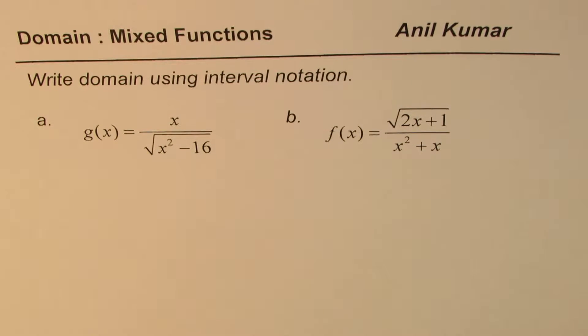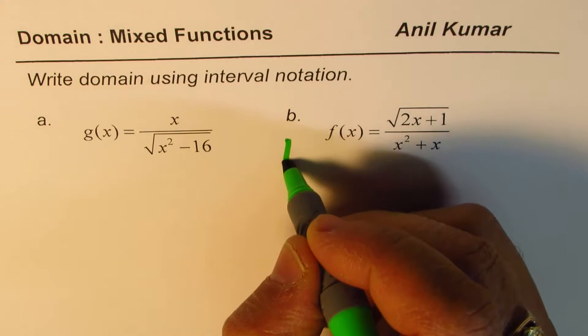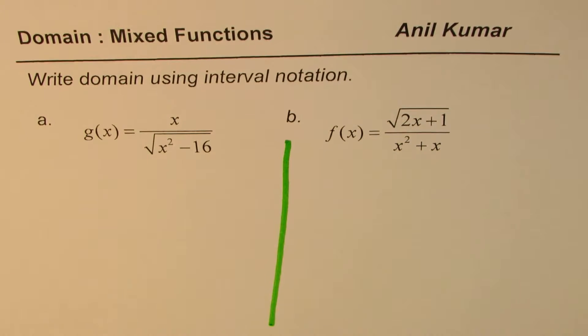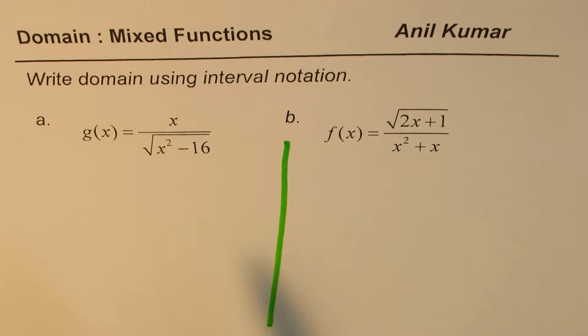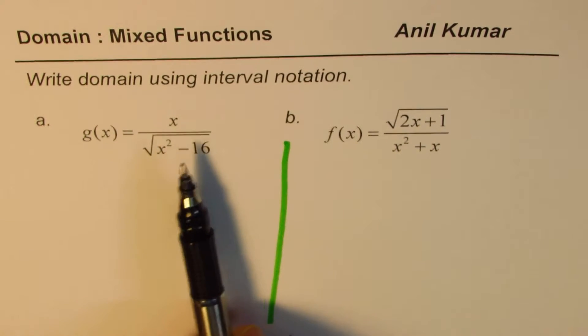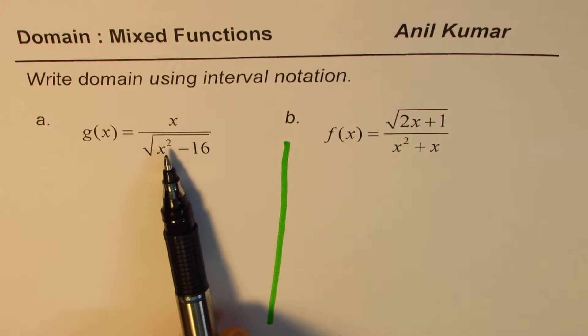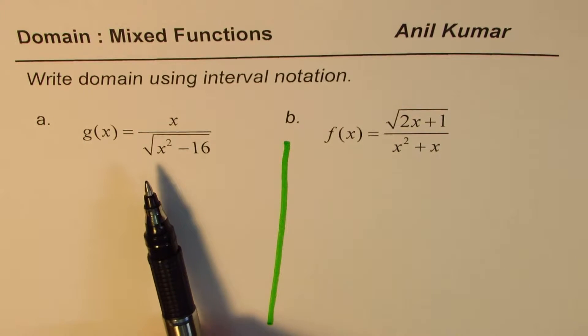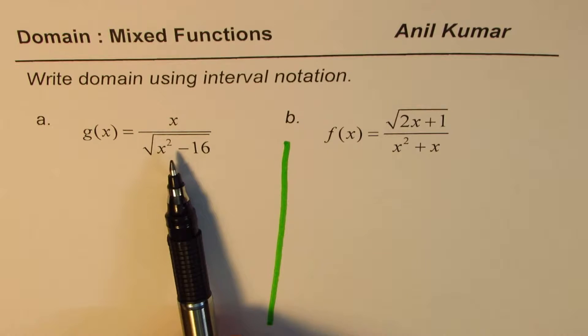You can always pause the video, answer the question, and then look into my suggestions. The first one here is g(x) equals x over square root of x squared minus 16. Now whenever you have something in the denominator it cannot be 0, right? That is very important because you cannot divide by 0.